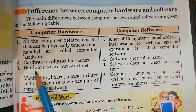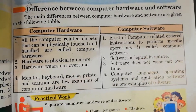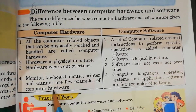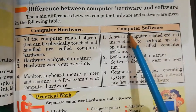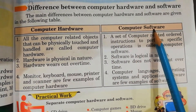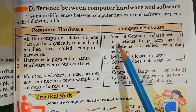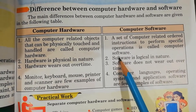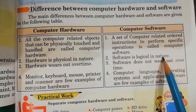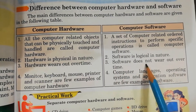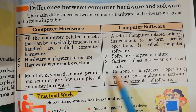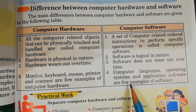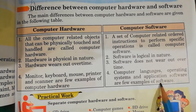Hardware Point No.2: Hardware is physical in nature. Point No.3: Hardware wears out over time. Point No.4: Monitor, keyboard, mouse, printer and scanner are few examples of computer hardware. Computer software — Point No.1: A set of computer-related ordered instructions to perform specific operations is called computer software. Point No.2: Software is logical in nature. Point No.3: Software does not wear out over time. Point No.4: Computer languages, operating systems and application software are few examples of software.